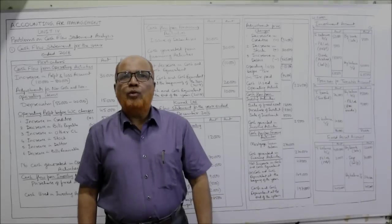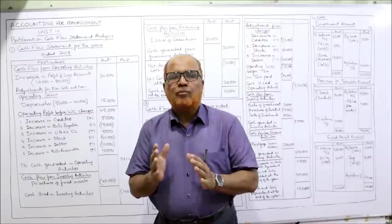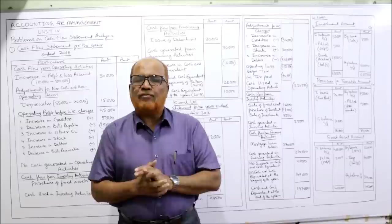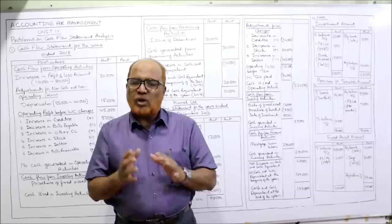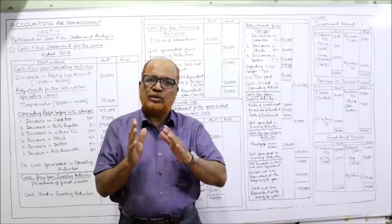Hello viewers, welcome to my channel. I'm Hashem Ali Khan. Now I'm going to start the problems on cash flow statement. In the previous three videos I've completely explained the theory regarding cash flow statement, and in the last video I explained the format. According to the format, all the cash flows are divided into three categories: operating activity, investing activity, and financing activity.